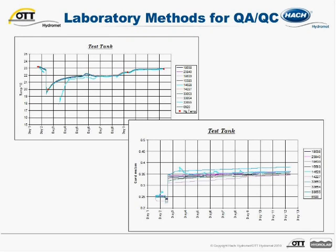Here we have temperature data in the upper left hand corner from 10 instruments that were in a laboratory tank over an 11 day period. The red squares are the QA/QC readings from a NIST traceable mercury thermometer. We can see that 9 of the 10 instruments appear to be working well with a nice tight data cluster. One instrument is clearly different from the rest, and further investigation of the instrument and system setup is required to understand the root cause of the deviation.